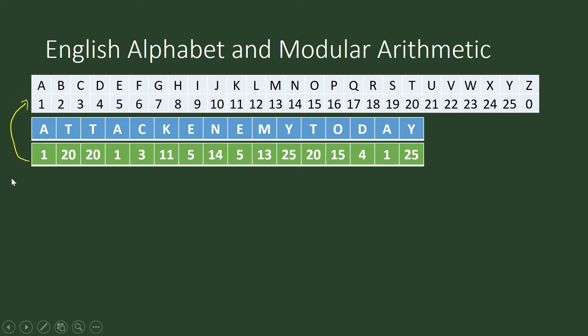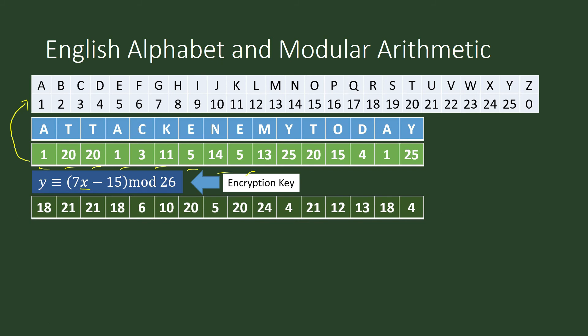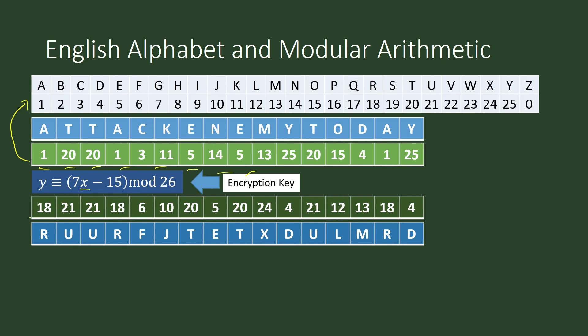You will apply the encryption key. You will encrypt this with the help of an encryption key. Y is congruent to 7 times X minus 15 modulo 26. So the X here stands for these integers. You will apply the encryption key to that set of integers. The result is this one. And then you will go back to the table once again to produce the letter equivalent of this string of integers. And this now is what you call the ciphertext.